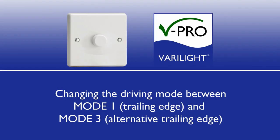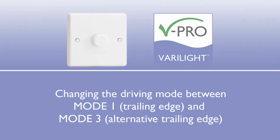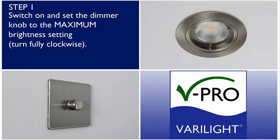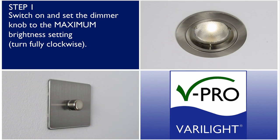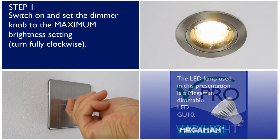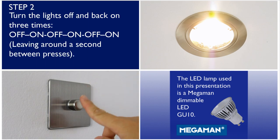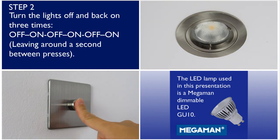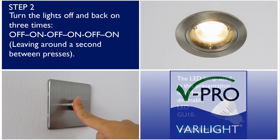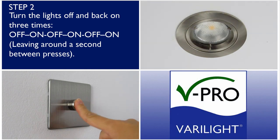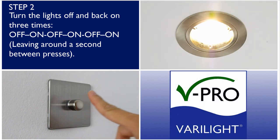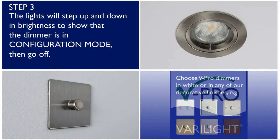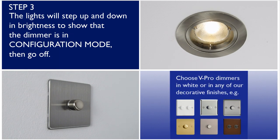Changing the driving mode between trailing edge mode 1 and alternative trailing edge mode 3. Switch on and set the dimmer knob to the maximum brightness setting. Turn the lights off and back on 3 times. The lights will step up and down in brightness to show that the dimmer is in configuration mode, then go off.